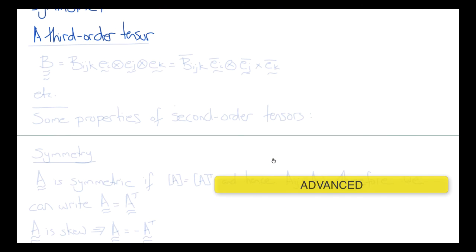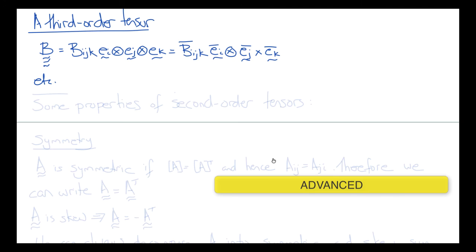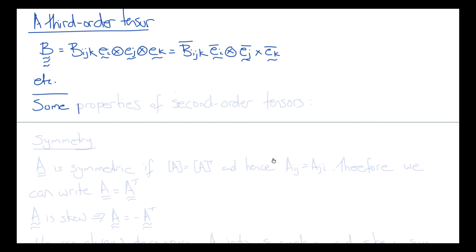A third-order tensor can be obtained by taking the dyadic product of three vectors. The components of the third-order tensor B would be Bijk times Ei dyadic Ej dyadic Ek, and in a different frame EI_bar they would be Bijk_bar times EI_bar dyadic EJ_bar dyadic EK_bar, and so on. The properties we've discussed for defining second-order tensors can be extended to third-order and above.